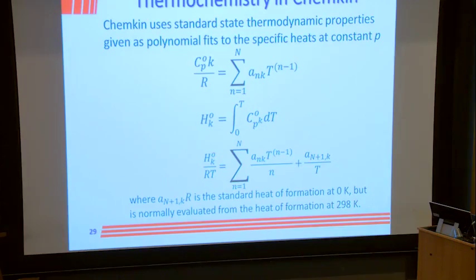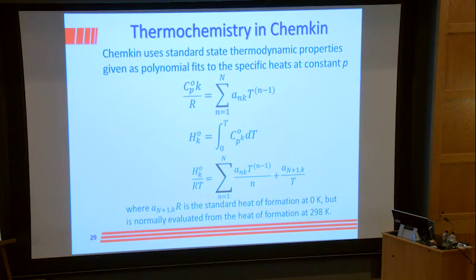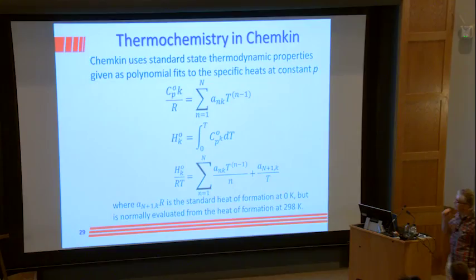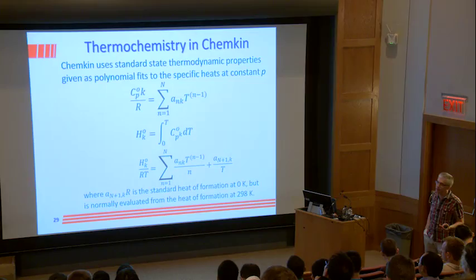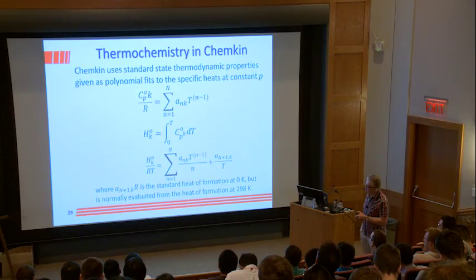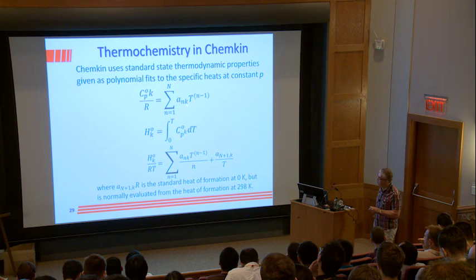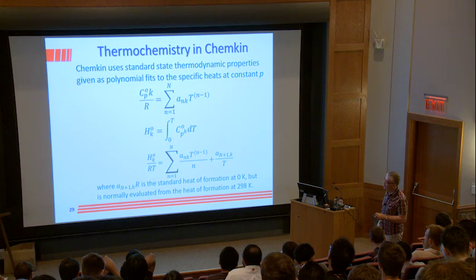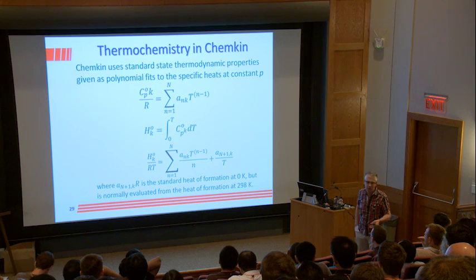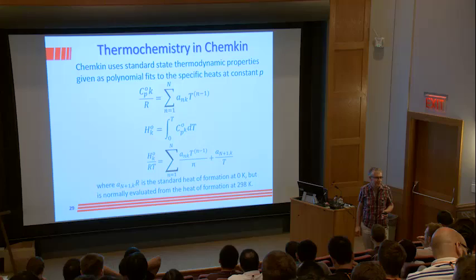What about thermochemistry in Chemkin? Most people use Chemkin for combustion kinetic calculations. Chemkin uses standard-state thermodynamic properties given as polynomial fits to the specific heats at constant pressure. The specific heat over R is the sum of polynomial values times T raised to the power N minus 1, and the heat of formation is the integral of Ncp dt.